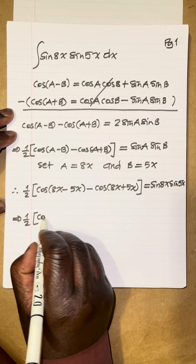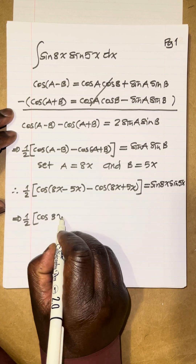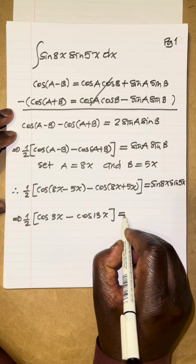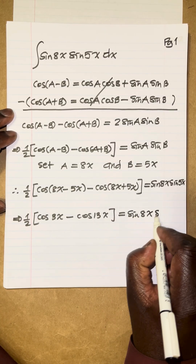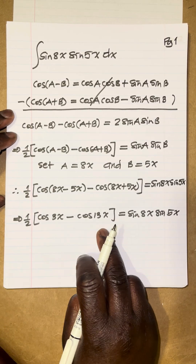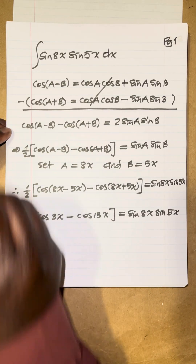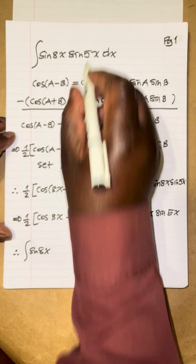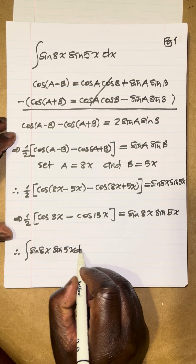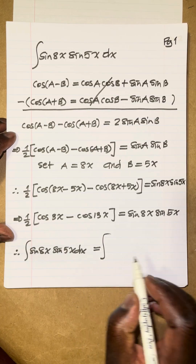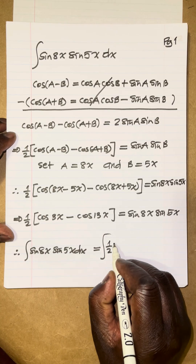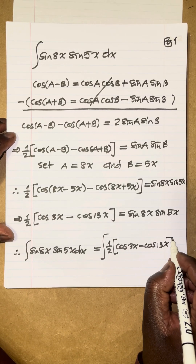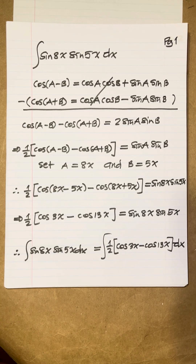So we have one-half times cosine of 3x minus cosine of 13x equals sine 8x sine 5x. Therefore, the integral of sine 8x sine 5x dx changes to the integral of one-half times cosine 3x minus cosine 13x, all times dx.